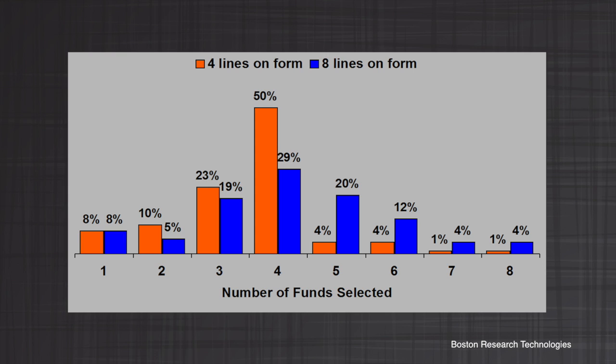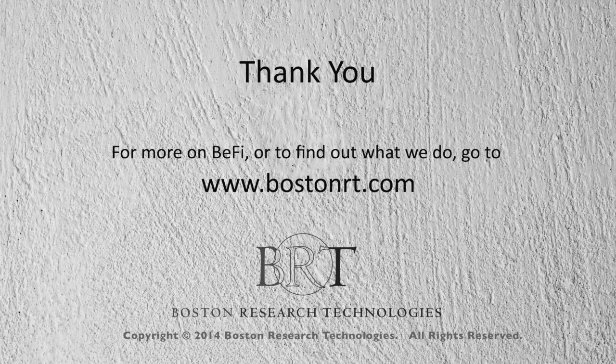When we look at the red bars, these are the folks who were given four lines and told if you want more than four lines, just click and we'll provide four more. We can see the dramatic difference you get simply by framing the question and the input form differently. This has enormous impact on how investors in a 401k plan will decide to make their election.